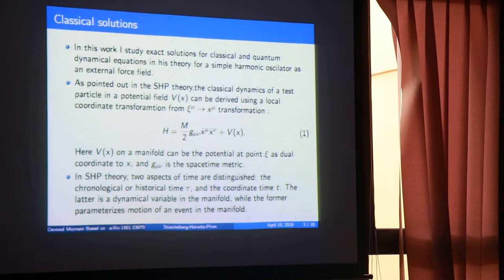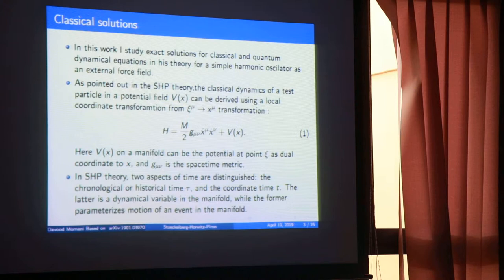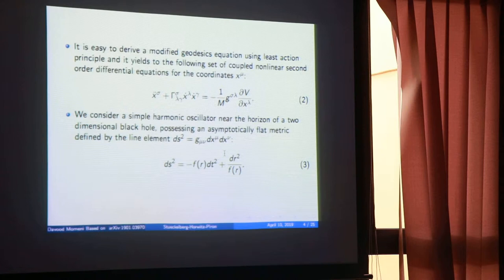The strategy is to define another coordinate, which we call chronical or historical time. We can encode the history of the particle — past and future — in this coordinate. Each time derivative in the Hamiltonian is then referred to this chronical or historical time.